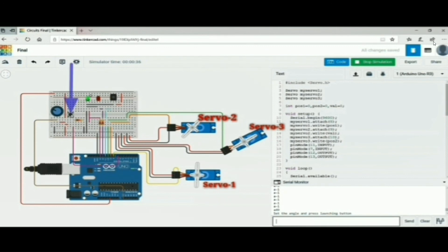servo 3 should rotate from 0 to 90 degree, servo 1 from 90 to 0 degree to unlock and launching takes place. Servo 3 should come back to its initial position. So now I am pressing the button. Servo 3 stretches the spring. Servo 1 unlocks. Launching takes place. Servo 3 comes back to its initial position.